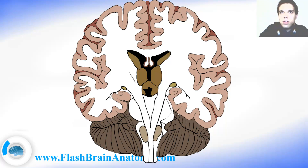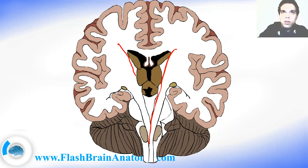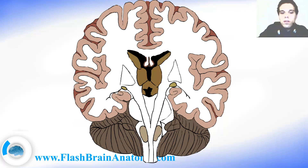As I mentioned, this is the internal capsule on both sides. And the internal capsule divides the thalamus and the caudate nucleus from the pallidum and putamen.